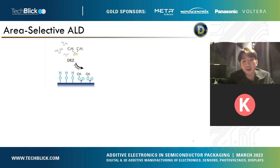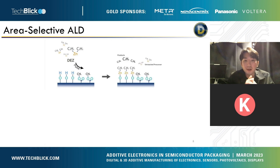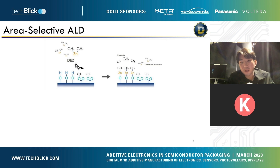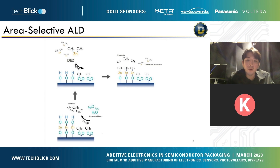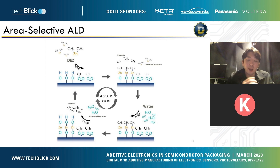Going a bit deeper into the chemistry — this is an example using diethyl zinc (DEZ), which is a precursor for zinc oxide. When we pattern half the surface with methyl-terminated surface groups, DEZ only undergoes ligand exchange with the hydroxyl-terminated surface, which is the pristine surface. The methyl-terminated groups remain inert. We can keep pulsing subsequent precursors and repeat this to achieve the desired thickness while maintaining the half surface inert towards zinc oxide growth.